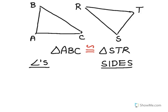So in this example, when I show that triangle ABC is congruent to triangle STR, what I am saying is that there is an exact correspondence between three angles of ABC and the three angles of STR and the same with the corresponding sides.